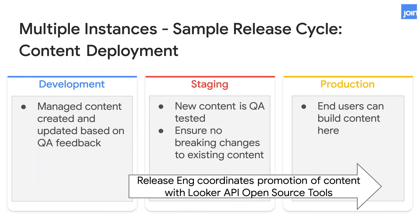Content, on the other hand, is not version controlled. Managed content can be created in upstream environments and, leveraging the Looker API and open source tools such as Gazer or Looker Deployer, can be promoted across instances. In this example, we create the managed content in the dev instance. The release engineering team then pushes the content downstream to the staging instance where it gets QA tested and validated against the LookML release branch. Once content is ready to be shipped, the release engineering team pushes the content to the production instance at the same time they deploy the release branch.